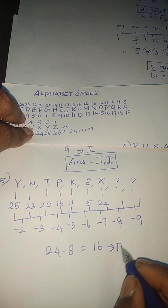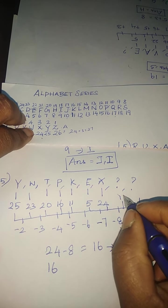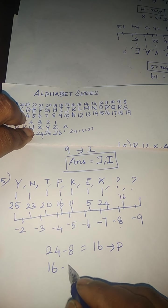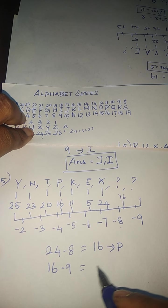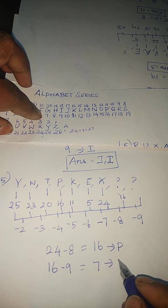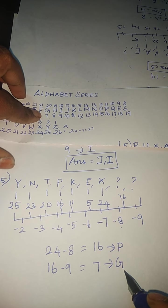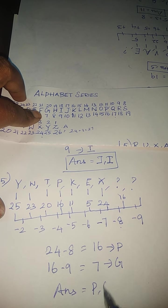The 16th number which denotes here is P. Then, 16 minus 9 which is 7. 7 which denotes here is G. Hence, the answer is P, G.